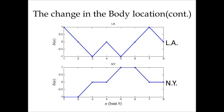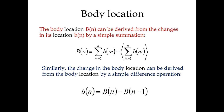However, if we plot this function — this is a discrete plot, of course, because this is a discrete signal — you can see that the L.A. change in body location has more zigzags than the New York one. But we are not interested in the change in body location; we are interested in the body location itself.